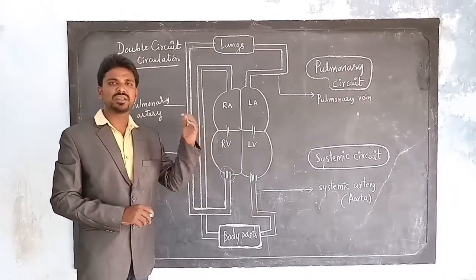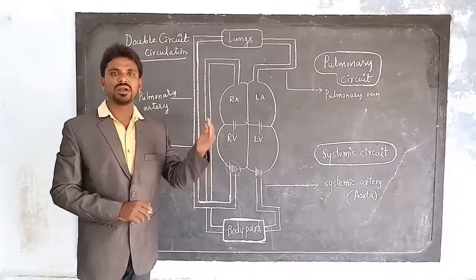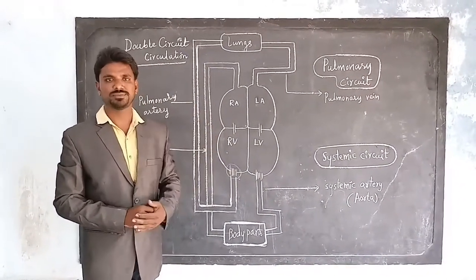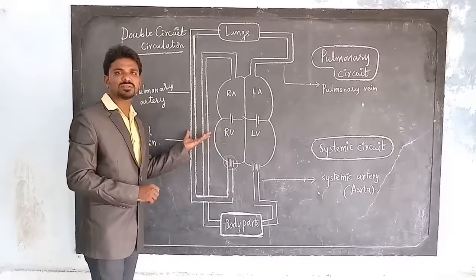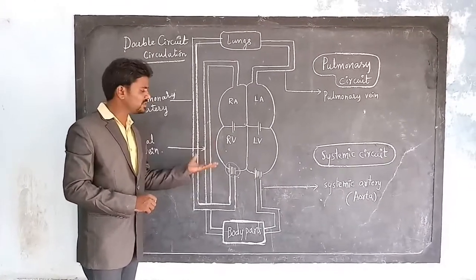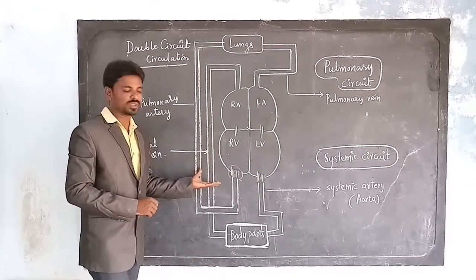It is seen in birds and in mammals. Now let's see very clearly how double circuit circulation takes place.